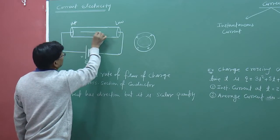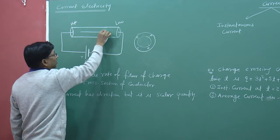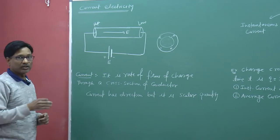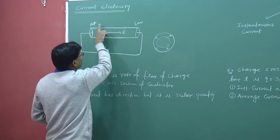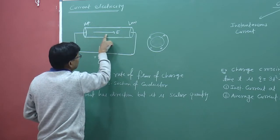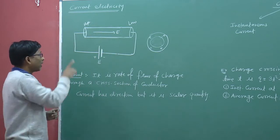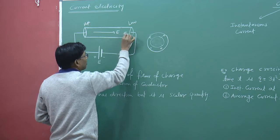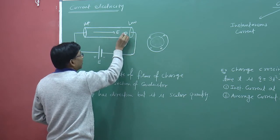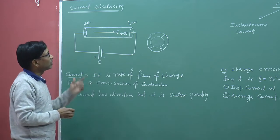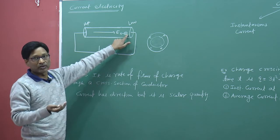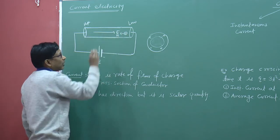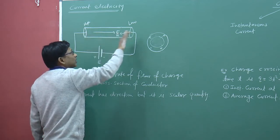This means that the electric field is present here. We have studied in electrostatics that the electric field is in the direction of potential decrease. So, from high to low potential means the electric field points in the direction of decreasing potential. If the conductor is in the electric field, then the charge experiences a force. If I place an electron here, then the electric field exerts a force on it. The electron moves in the direction opposite to the electric field, which means that the current will flow.